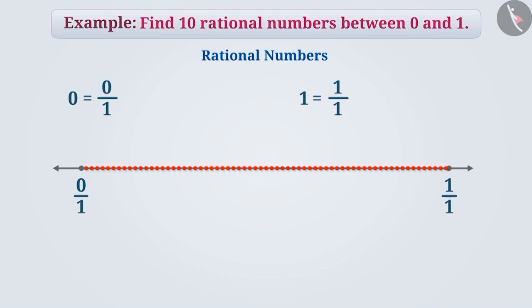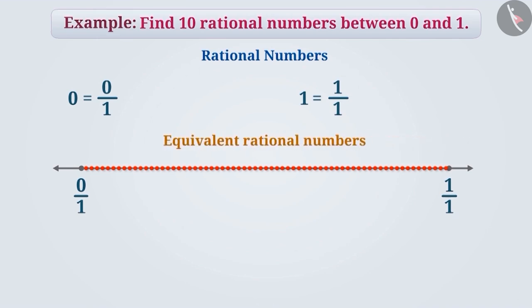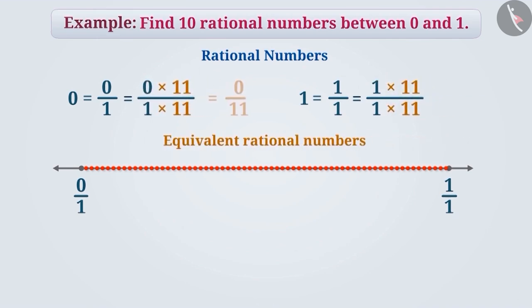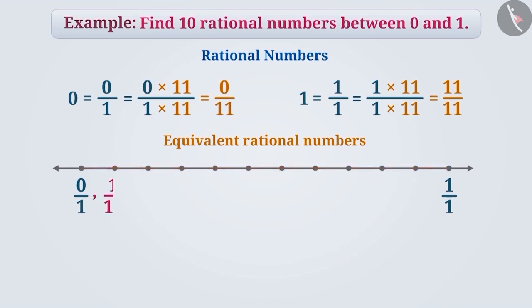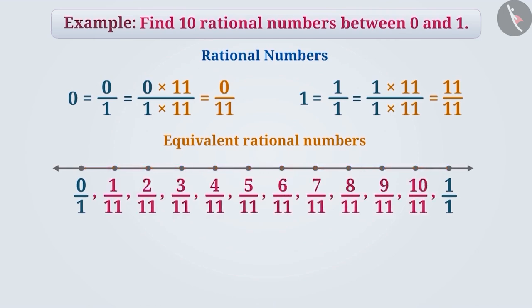For this, we can write equivalent rational numbers of 0 by 1 and 1 by 1 as 0 by 11 and 11 by 11 respectively. With this, we can say that in between these rational numbers, there are many rational numbers such as 1 by 11 to 10 by 11.